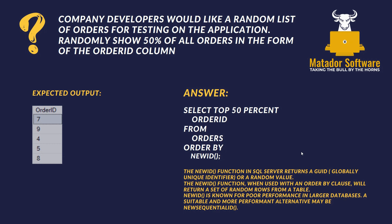NEWID() returns a GUID — a globally unique identifier. These may be referred to as UUID in other versions of SQL. When we use this NEWID() function in the ORDER BY clause, it returns a set of random rows from our selected table. It can be known for poor performance in larger databases, so a more performant alternative may be NEWSEQUENTIALID(), where values increase in sequential steps, and that might take some of the legwork away.